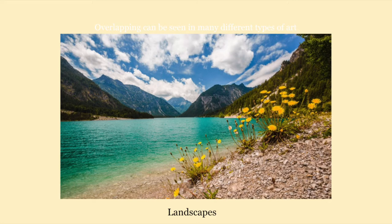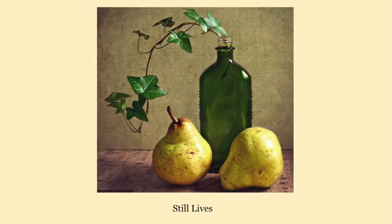All right everyone, let's reel it back in and focus again on the video. I see a lot of overlapping in this photo — in the foreground as well as the background. The foreground is what is closest to us, so those flowers in the foreground are overlapping the mountains in the background. We can find overlapping in landscapes, and we can also find overlapping in still lives. Still lives are a setup of objects often placed in front of and behind one another, which artists use as subjects to paint or draw. These are usually objects that don't move, which is why they're called still lives.